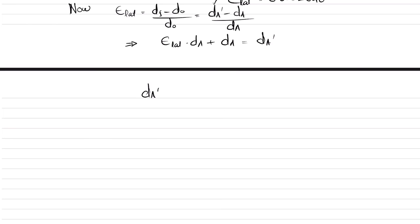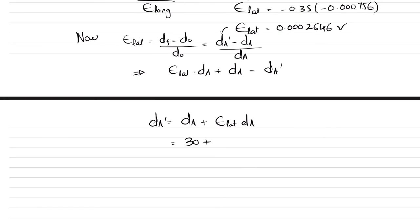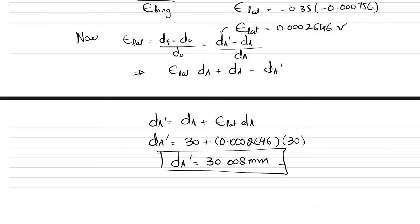From the lateral strain, we find the new diameter: εlateral = (da' − da) / da, so da' = da + εlateral × da = 30 + 0.0002646 × 30. The new diameter da' = 30.008 millimeters. So due to the applied load, the cylinder length decreases and its diameter increases to 30.008 mm.